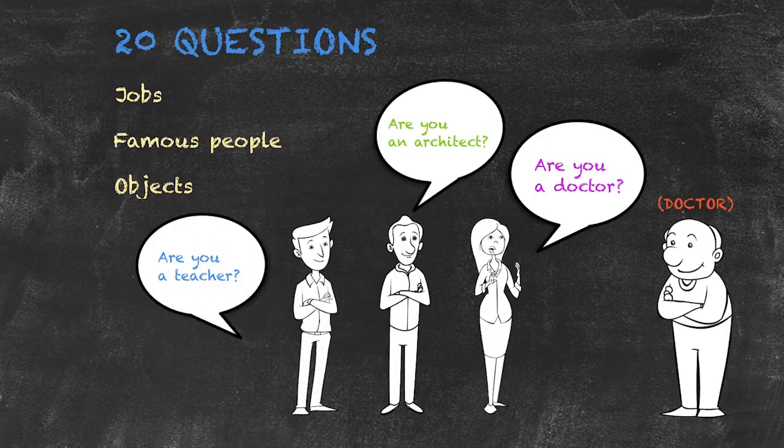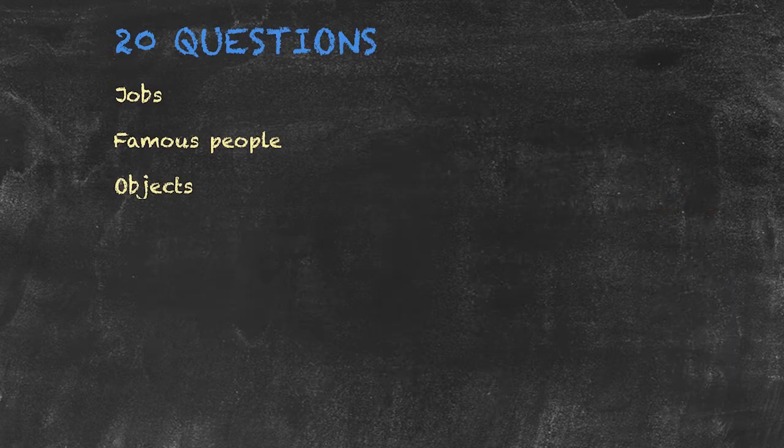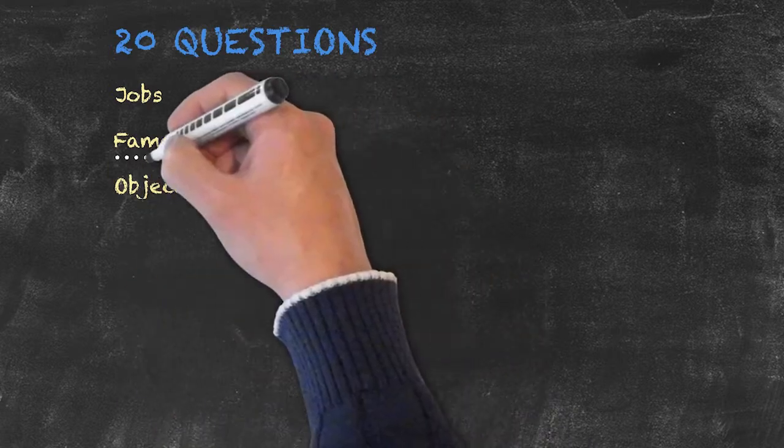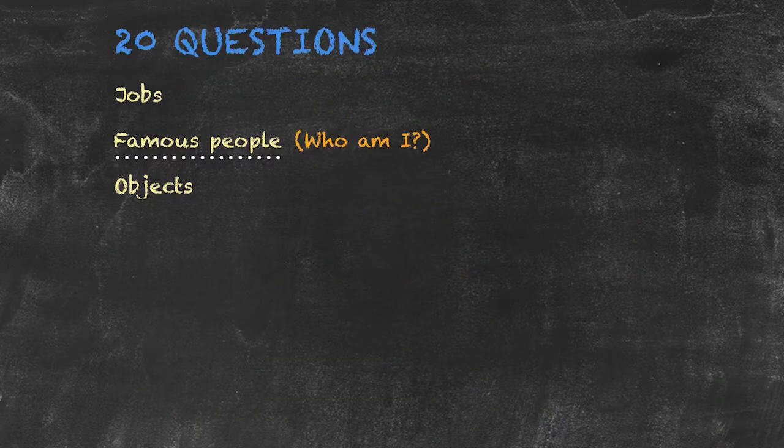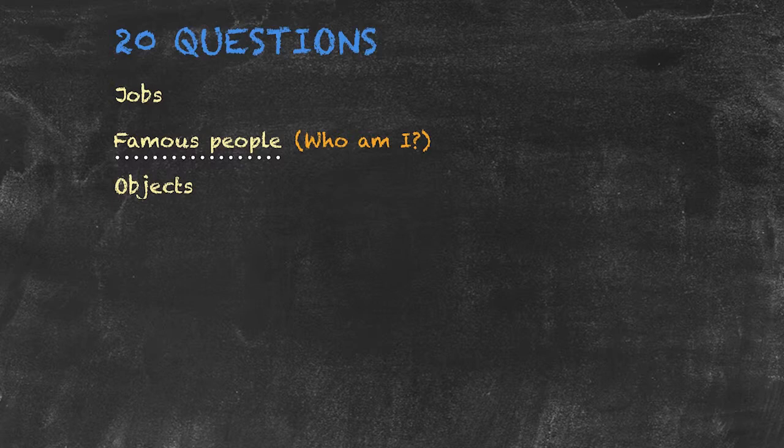Hopefully, by the end of those two minutes, based upon the information given, the students will be able to guess what that job was. The same can also be done for famous people, who am I? Of course, that famous person would still have to be alive as, have they passed away, we would speak about them in the past tense. You can also use it for objects as well.